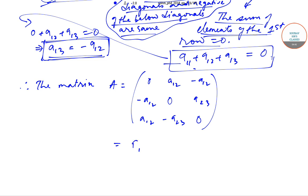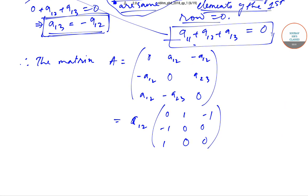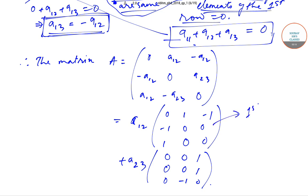Now if we break it down by taking a_{12} common, we get the first basis matrix: [0, 1, -1; -1, 0, 0; 1, 0, 0]. Taking a_{23} common gives the second basis matrix: [0, 0, 0; 0, 0, 1; 0, -1, 0]. So these two matrices form the basis for W.